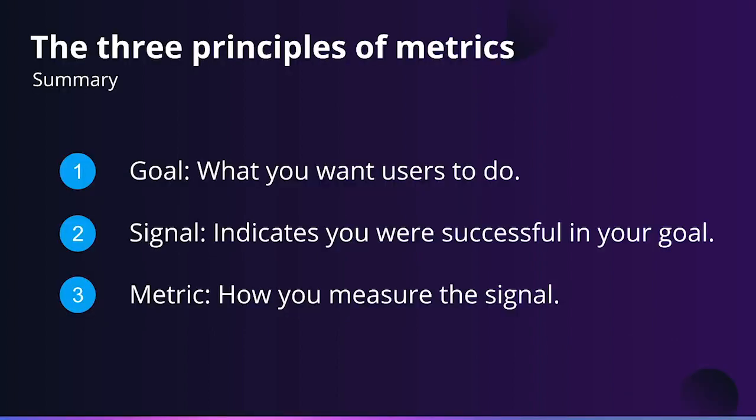So again, we want to make sure that we have a nice goal — what do the users want to do? We want to make sure we have a good signal — how do we know that the user was successful in our goal? And finally, how do we measure that? So we want to make sure all three of these things are present. What I like to do is write these down on a sticky note and have that present at all times, along with the challenge, so that these things are always visible in front of us.